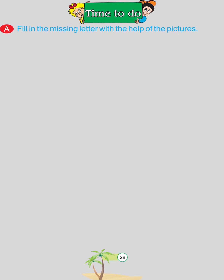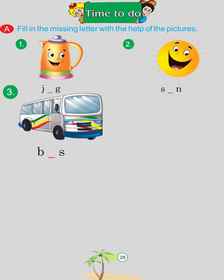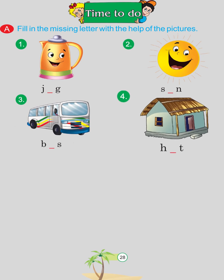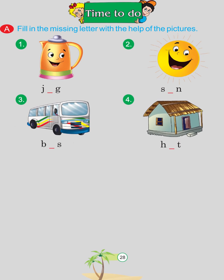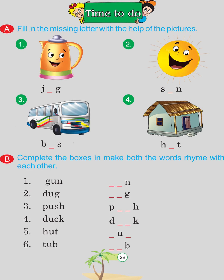Time to do. Fill in the missing letter with the help of the pictures: Jug, Sun, Bus, Hut. Complete the boxes and make both the words rhyme with each other: Gun, Dug, Push, Duck, Hut, Tub.